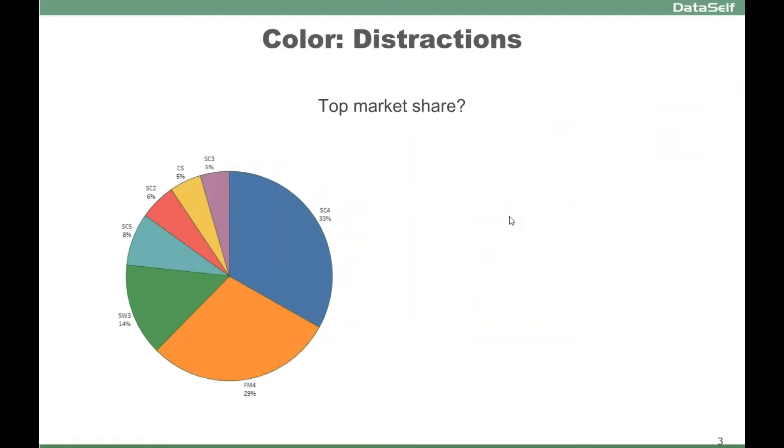Another example on the same topic about colors: colors can be very distracting. If you have a pie chart like this and you want to see your top market share, you can tell that pretty much these three take about three-quarters of the total. So it's telling the story.